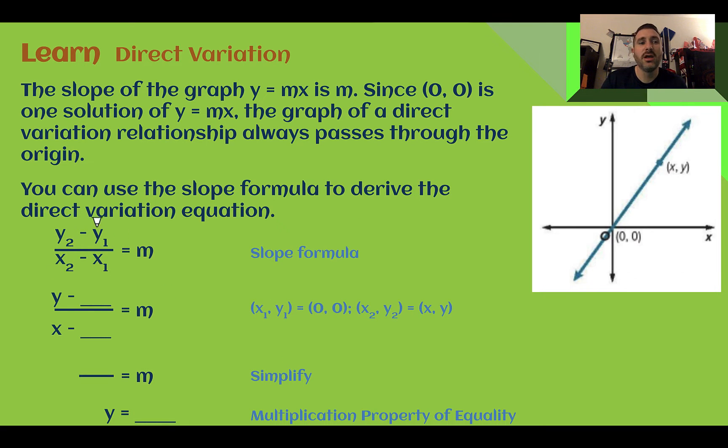So if we use 0, 0 to derive this formula, we can use our slope formula that we've learned about previously. y2 minus y1 divided by x2 minus x1 is our slope. If we replace one of the coordinates with 0, 0, what we end up doing is subtracting 0, so we're just left with the other coordinate, which is y and then x. In order to get our equation, we need to use our multiplication property and multiply both sides by x. On the left side, x divided by x ends up being 1, so I'm just left with y. My final equation ends up being y equals mx.